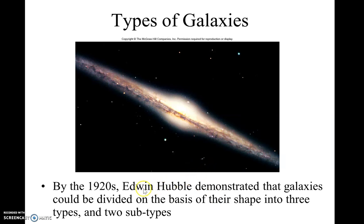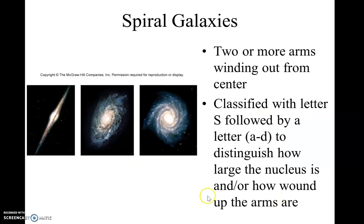Nowadays we have much better telescopes and new technologies that make telescopes much more powerful than that. But back in the 1920s, Hubble found himself at Mount Wilson as an astronomer and came up with three different types — those are the three types I mentioned before.